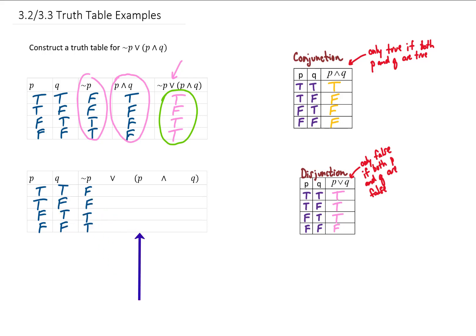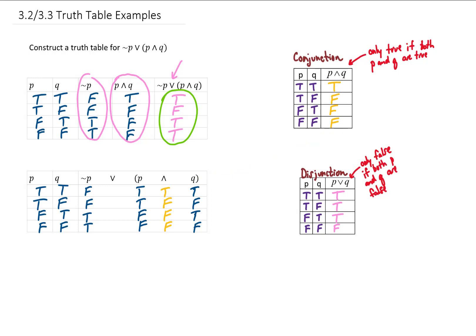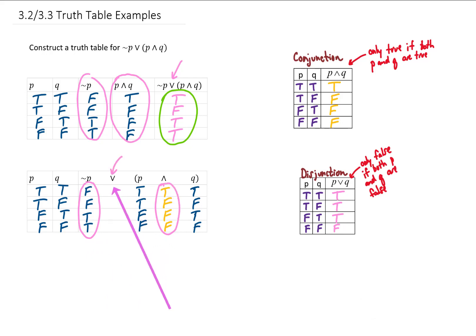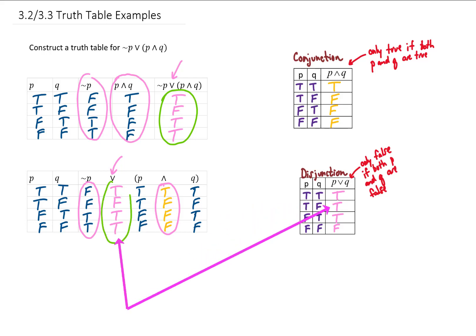Then I'll copy our P and Q values down. Completing the AND statement first because it's in parentheses, we put our conjunction answers between P and Q: true, false, false, and false. Now to get our answer column, we compare the not P column with the P and Q column using OR. False and true gives true; false and false gives false; true and false gives true; true and false gives true. Our answer column ends up right here in the middle.